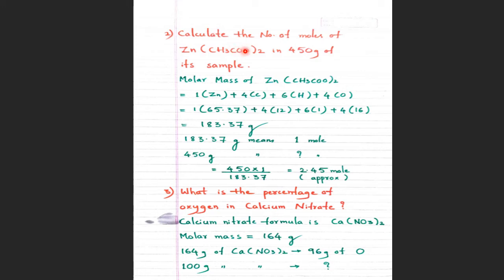Numerical number two: Calculate the number of moles of zinc acetate in 450 grams of its sample. That means, how many moles of zinc acetate are there in 450 grams? Again we calculate the molar mass. Zinc acetate has 1 zinc, 4 carbons, 6 hydrogens, and 4 oxygens. Adding the atomic masses of all atoms: 1 Zn + 4 C + 6 H + 4 O gives a molar mass of 183.37 grams.